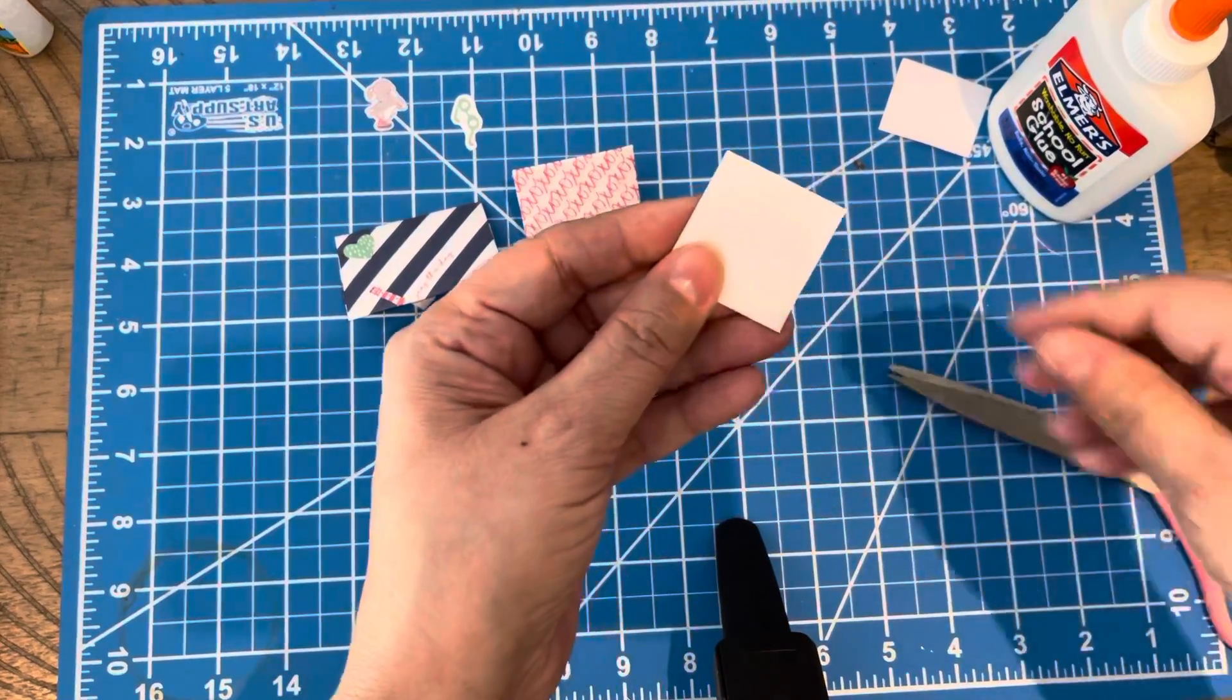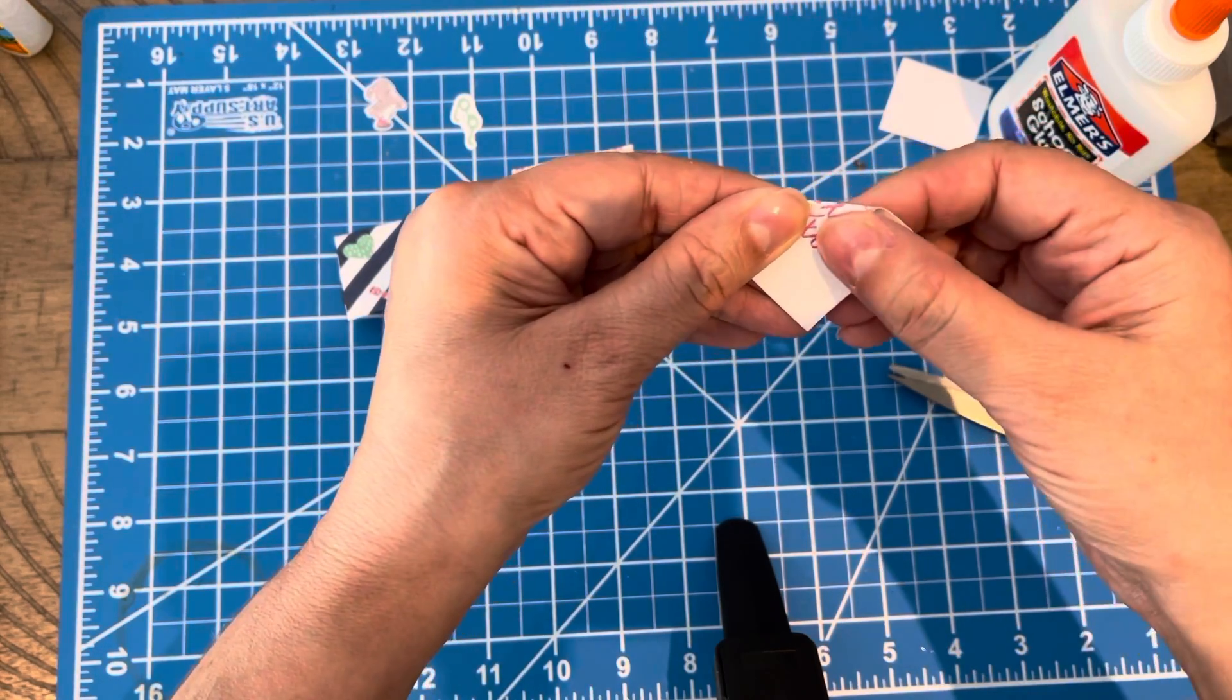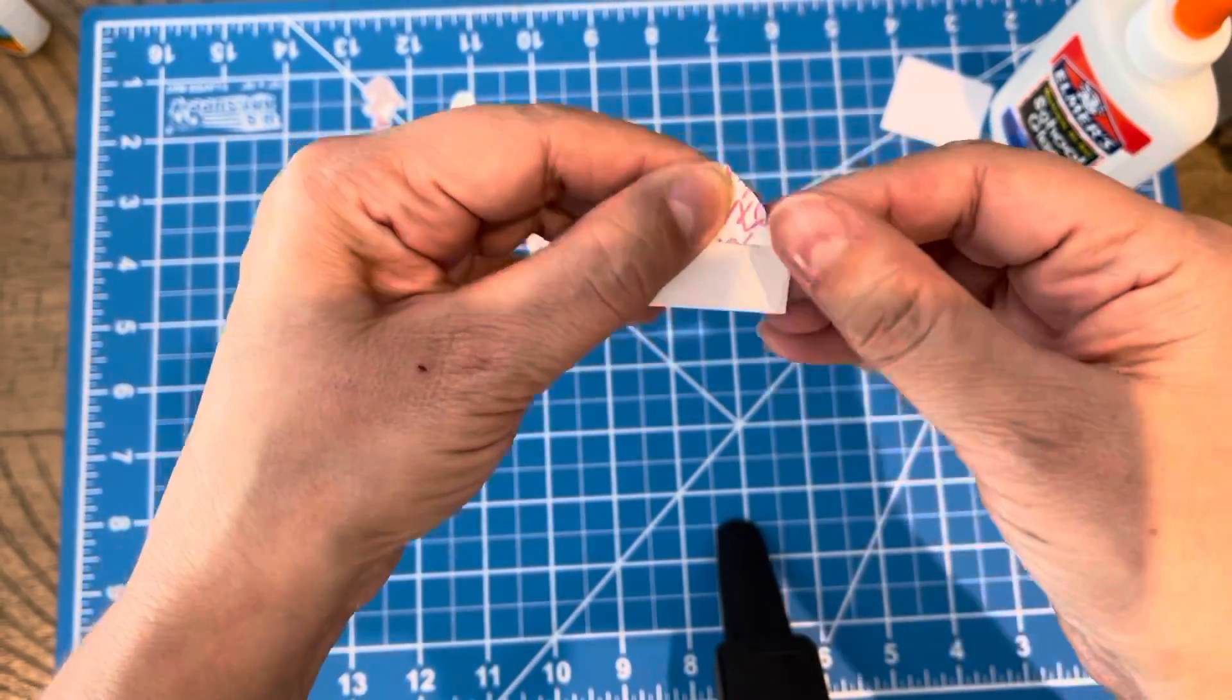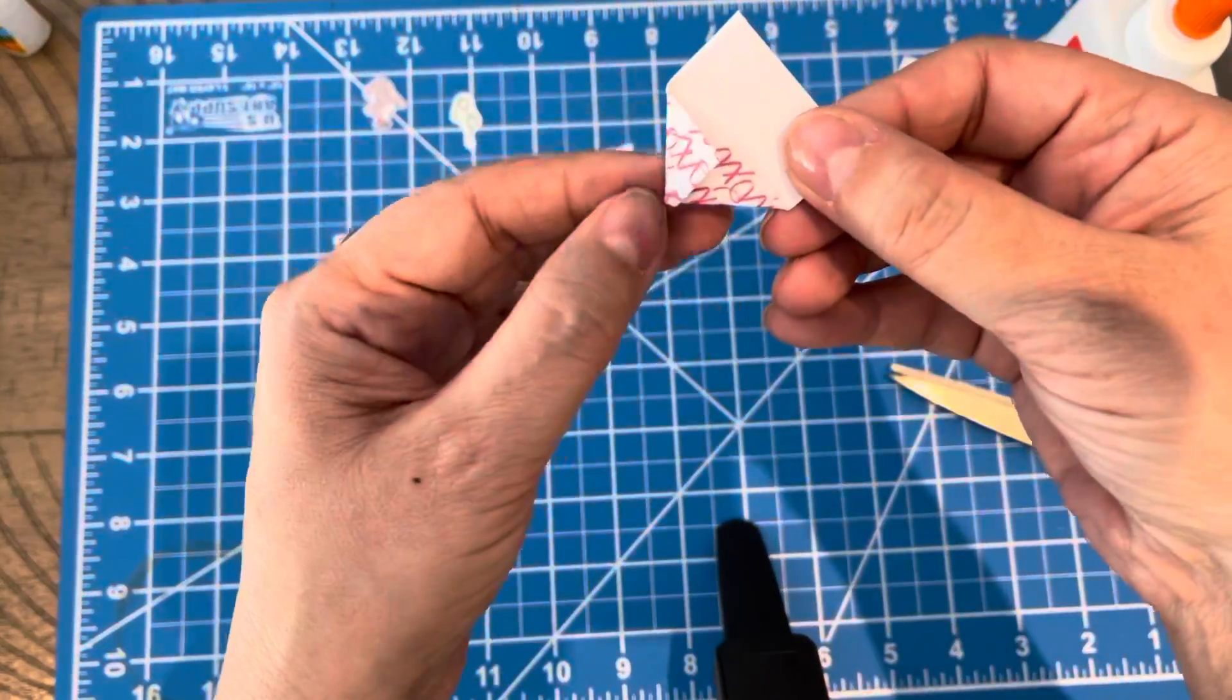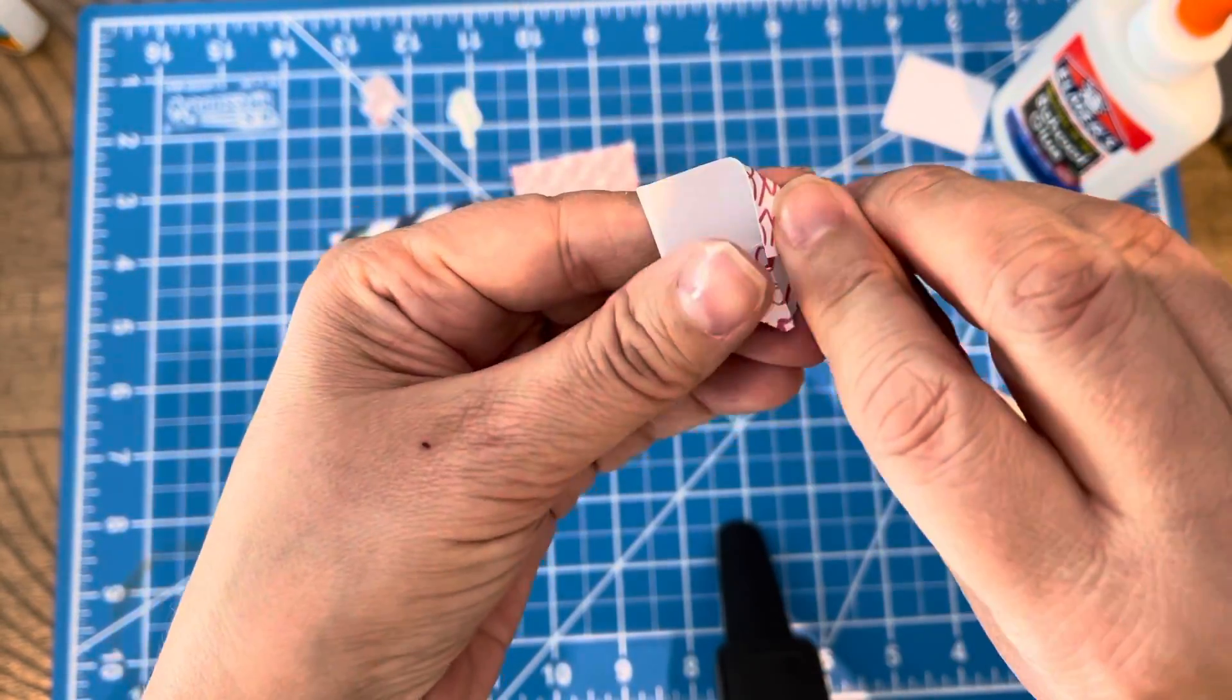And then you want to create the little point of the envelope. So easy guys, look. And then you just fold over that side. Can you see it coming to life? You fold over that side. This is going to be for my little Blithe.